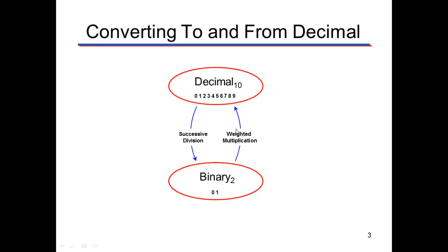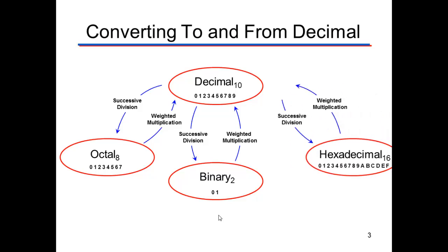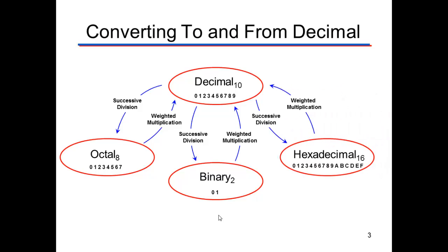When we want to go from decimal to binary, we either use successive division or weighted multiplication. We'll use the same procedure to move between decimal and octal, and hexadecimal and decimal. It's just the numbers we multiply and divide by are different.